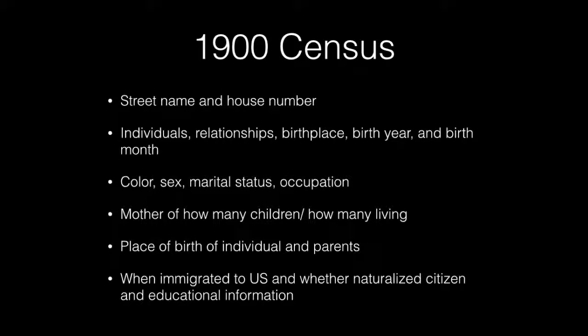The 1900 Census has the street name and house number, the individual's relationships, birthplace, birth year, and birth month, making it very helpful in determining exact birth information. It also shows color, marital status, and occupation, the number of children a mother has had and how many are living, the place of birth of the individual and their parents, when they immigrated to the United States, whether they are naturalized citizens, and educational information.